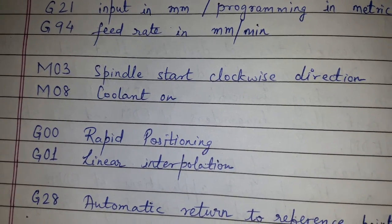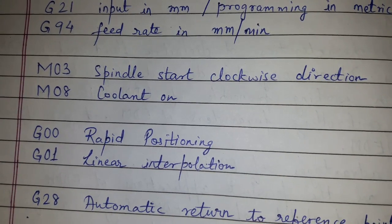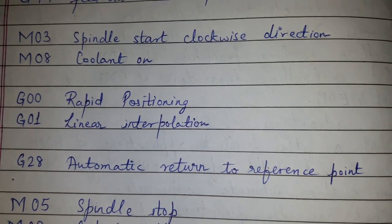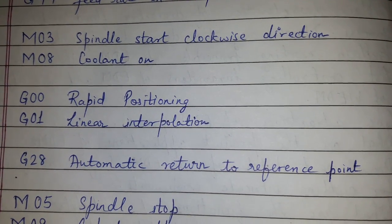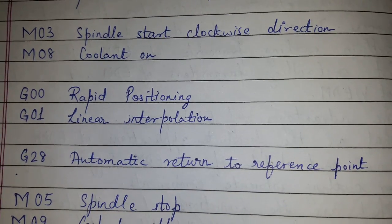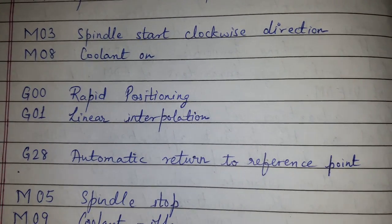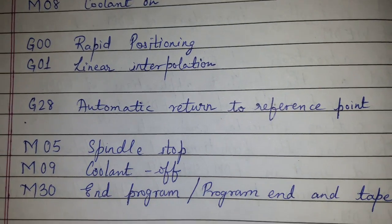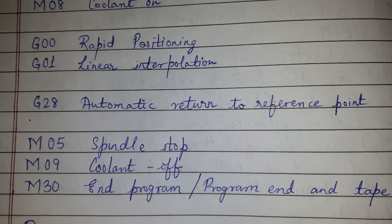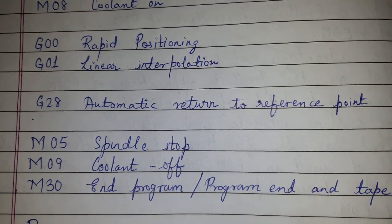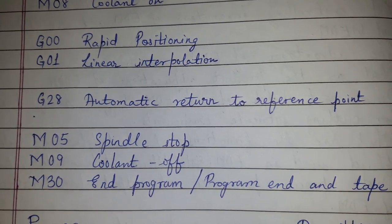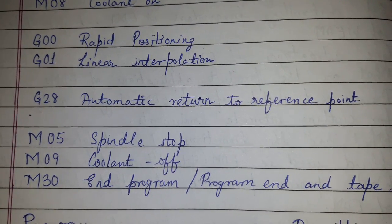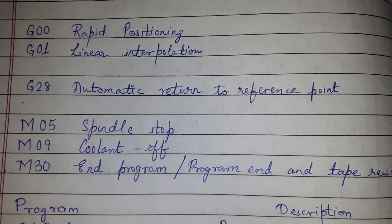G01 is linear interpolation — wherever there is straight line movement, we use G01. G28 is automatic return to the reference point; once the operation is completed, G28 automatically returns to the reference point. M05 is spindle stop after the job is done. M09 is coolant off, and M30 is program end and tape rewind.